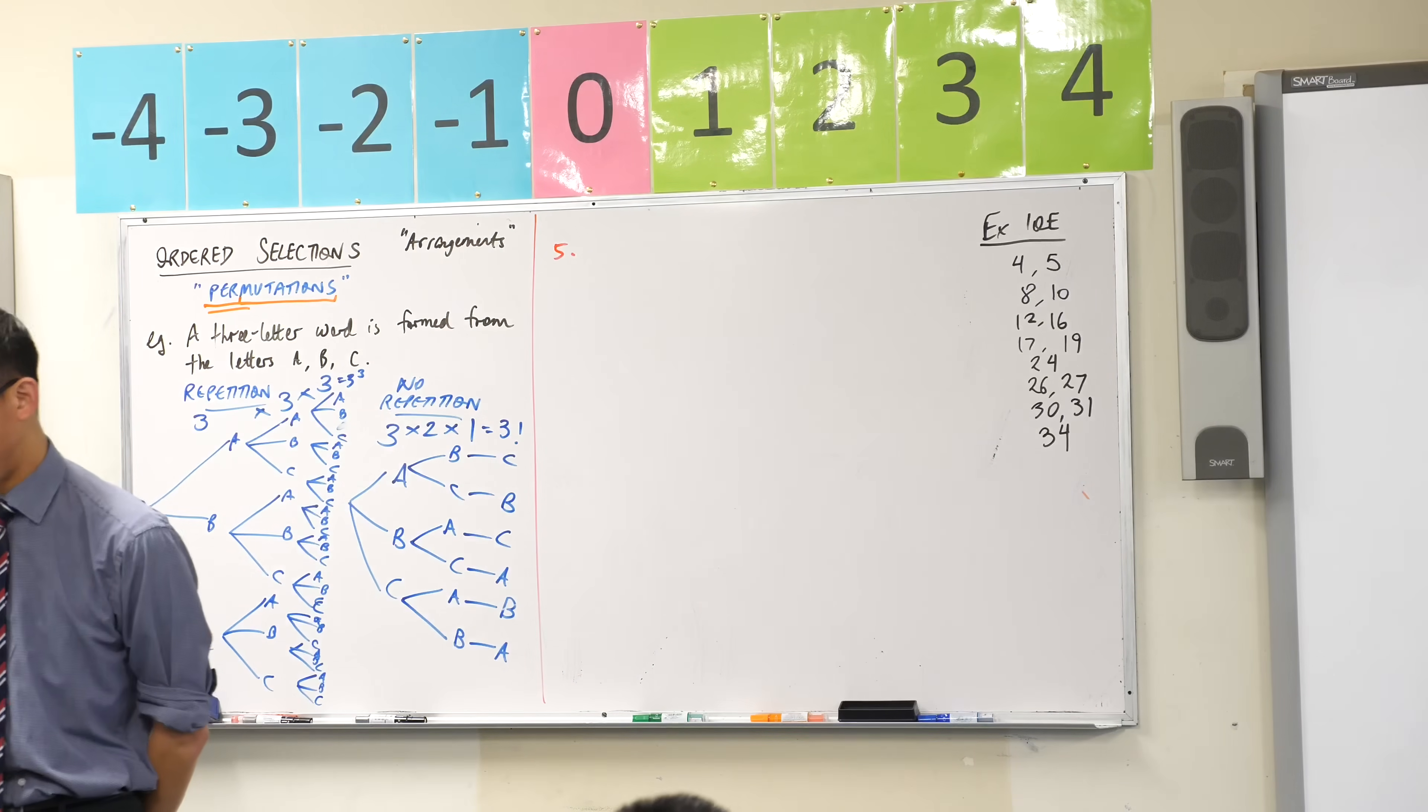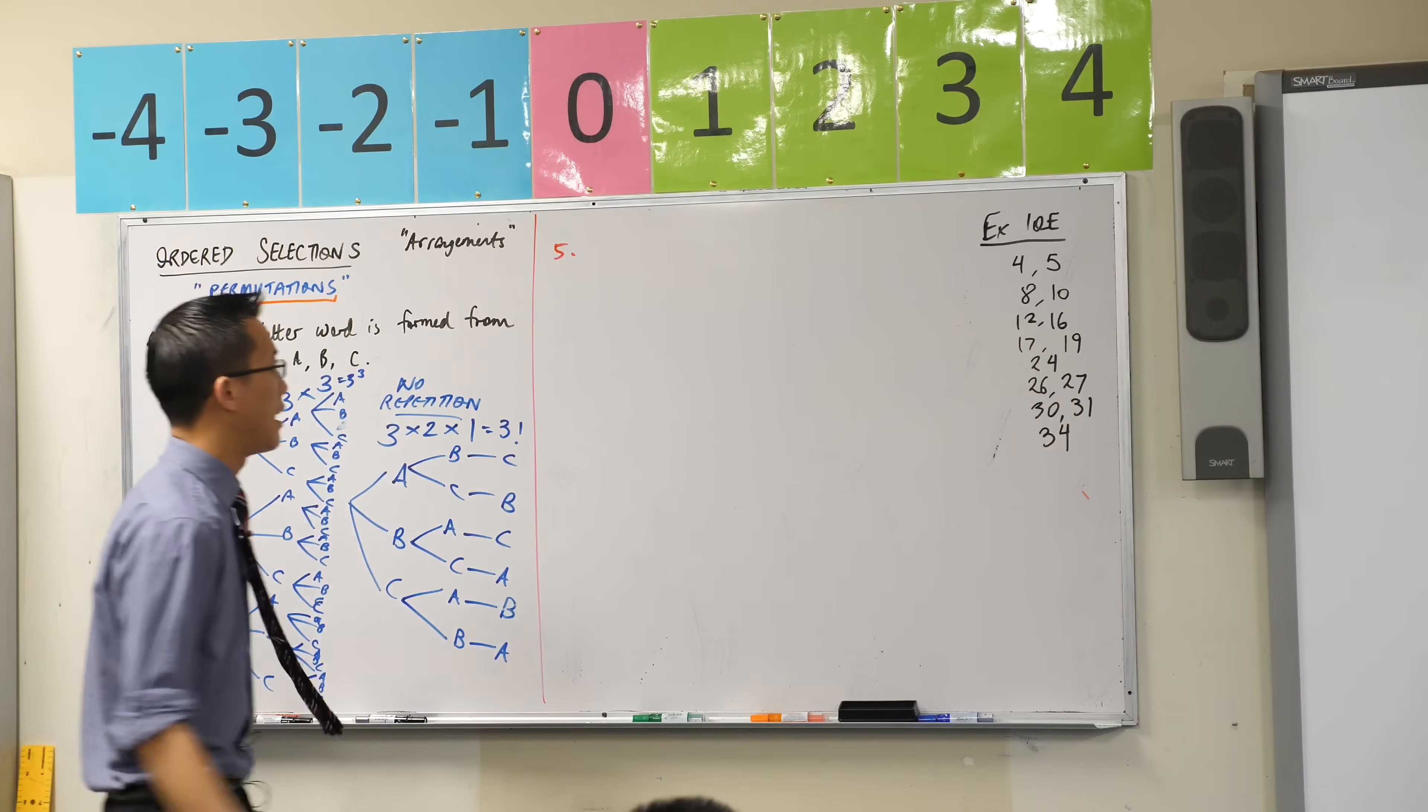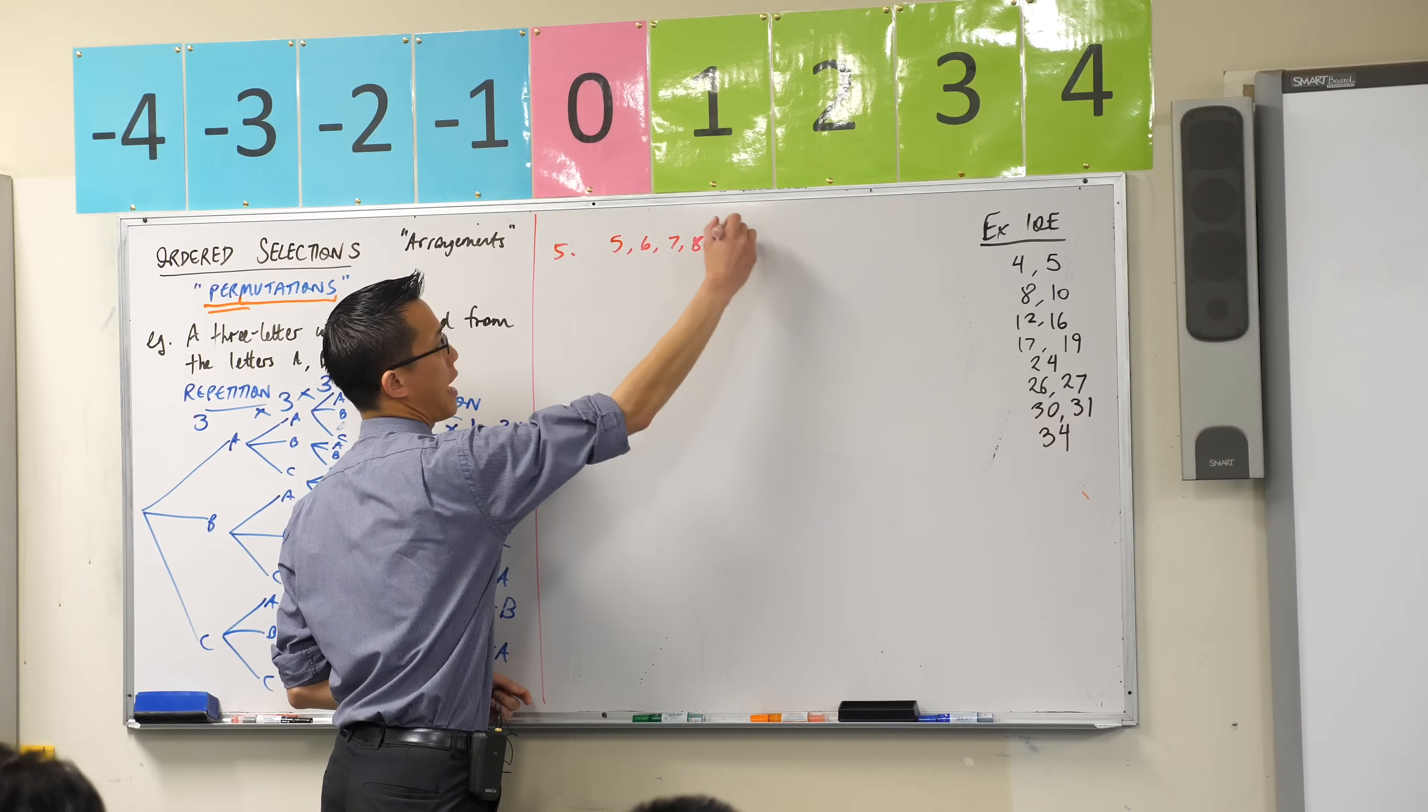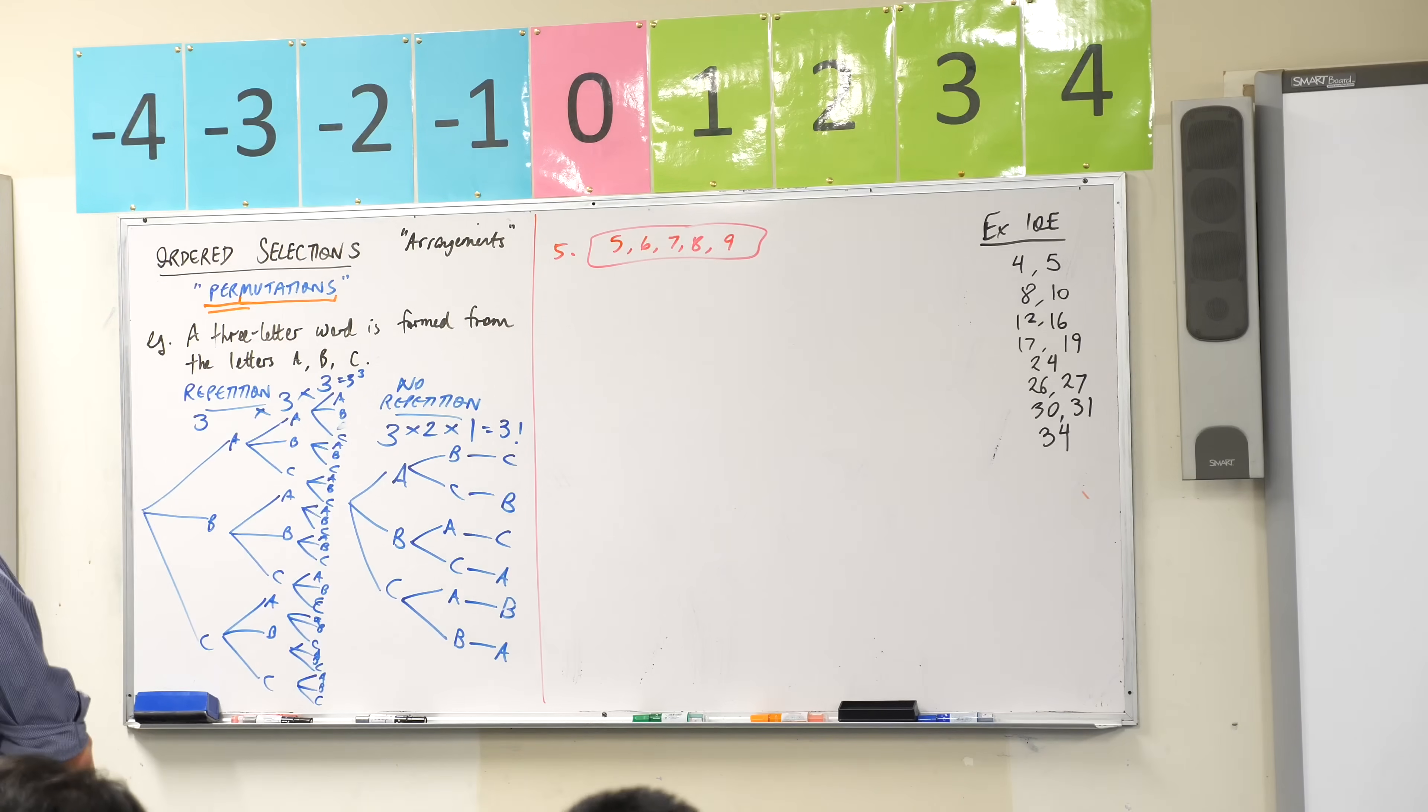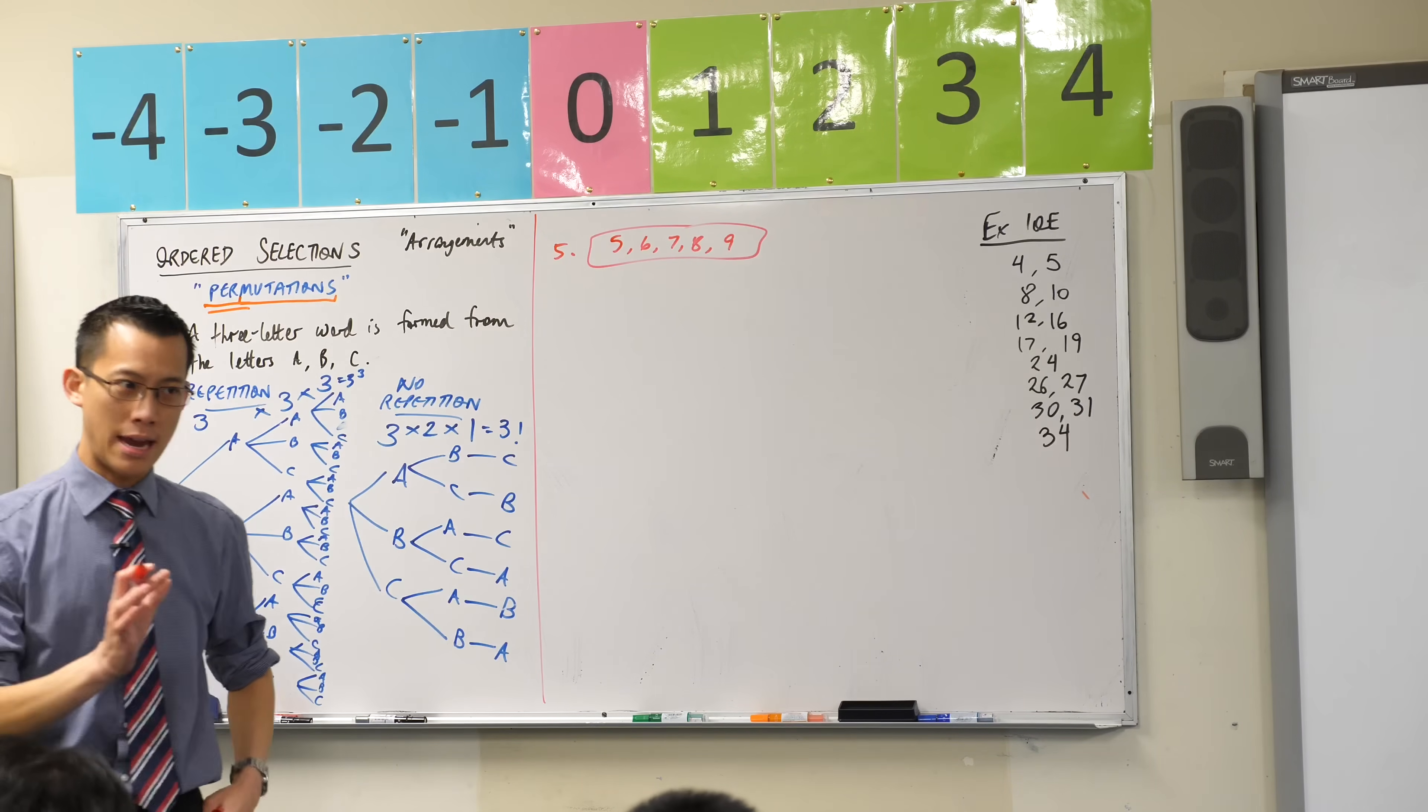Find how many four digit numbers can be formed using the digits 5, 6, 7, 8 and 9. 5, 6, 7, 8 and 9 are what we get to choose from. For the intents and purposes of what I want to illustrate to you, I'm just interested in part A, no digit is to be repeated.